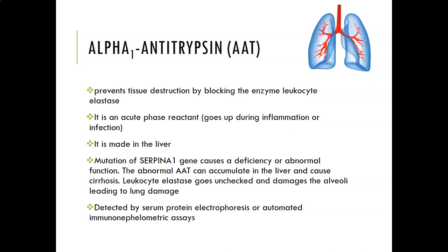A mutation of the SERPINA1 gene causes a deficiency or abnormal function of alpha-1 antitrypsin. That abnormal alpha-1 antitrypsin can accumulate in the liver and cause cirrhosis, and the leukocyte elastase, if it goes unchecked because the alpha-1 antitrypsin is either not there or not functioning properly, damages the alveoli, leading to lung damage.